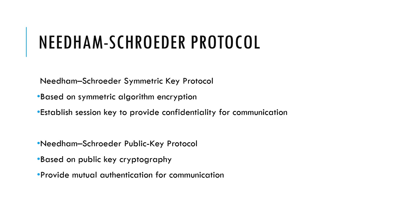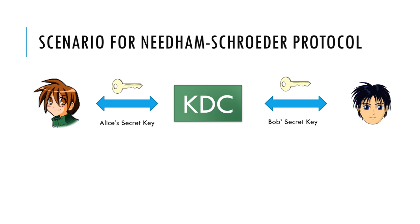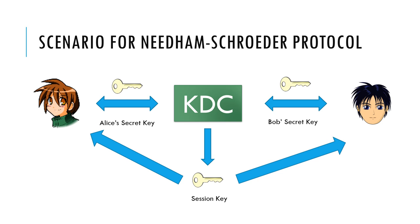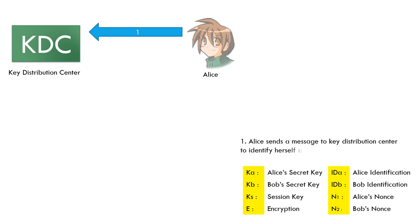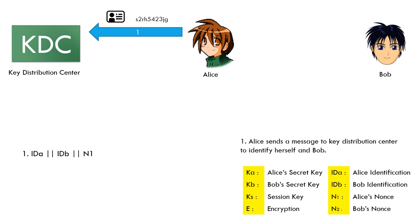Our scenario is where Alice and Bob each share a secret key with the Key Distribution Center respectively. The Key Distribution Center generates a session key and distributes the session keys to Alice and Bob. Firstly, Alice sends a message to the Key Distribution Center to identify herself and Bob. The message contains the identification for Alice and Bob, and Alice's nonce.